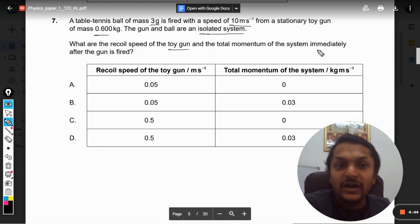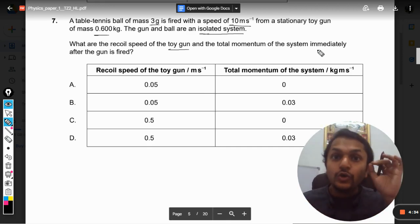Now this question is from the conservation of linear momentum topic, and we know that for an isolated system, the total momentum of the system never changes. Before the ball was fired, before the gun was fired, we see that the ball is at rest and the gun is at rest.